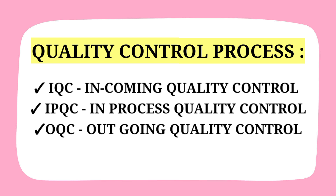Incoming quality control tests materials the company buys from suppliers, including raw materials and packaging materials. In-process quality control checks whether the product is going to meet specifications. Outgoing quality control checks whether the finished product meets the required standards or specifications set by the regulatory authorities.